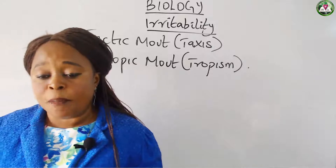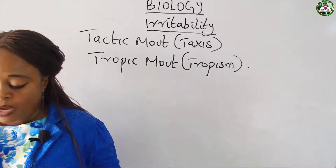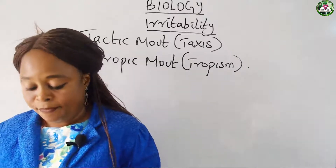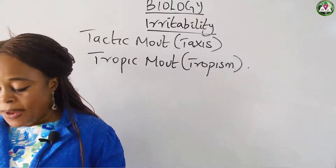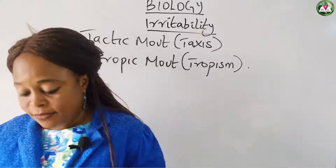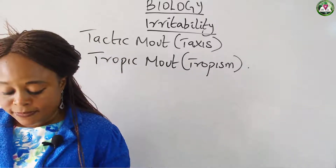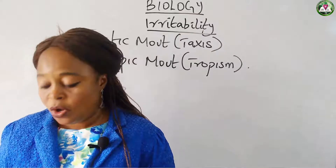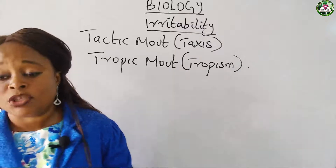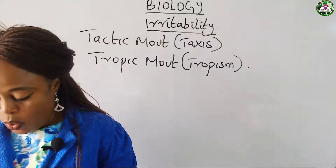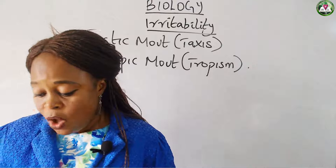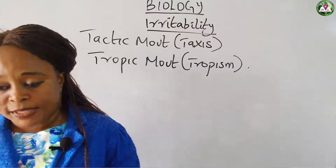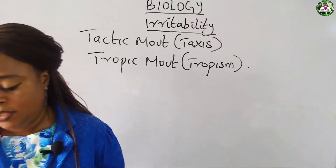There are different forms of tropic movement. We have phototropism — directional movement of some parts of a plant to light. Hydrotropism is the directional movement of some parts to water. Geotropism is the directional movement of some parts of a plant to gravity. Galvanotropism is the directional movement of some parts of a plant to electric currents. Thigmotropism is the directional movement of some parts of a plant to touch. Scototropism is the directional movement of some parts of a plant to shadow. Chemotropism is the directional movement of some parts of a plant to chemicals. Then we have rheotropism, which is the directional movement of some parts of a plant to water currents.